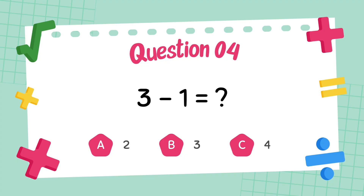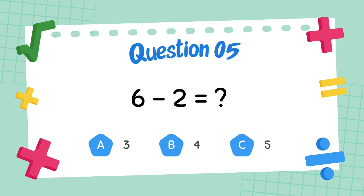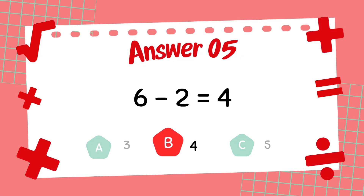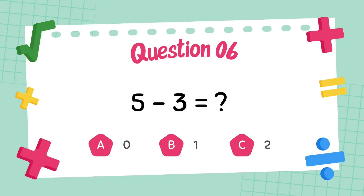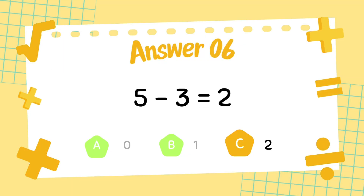What is three minus one? The answer is two. What is six minus two? The answer is four. What is five minus three? The answer is two.